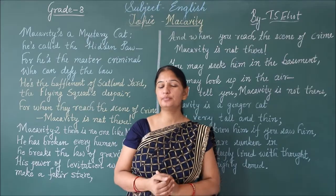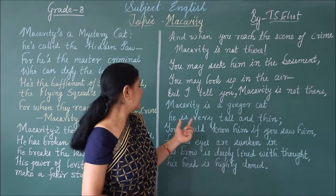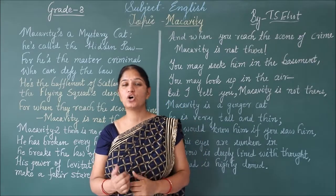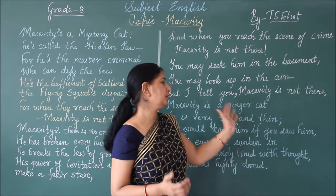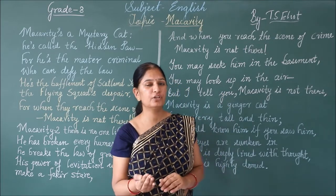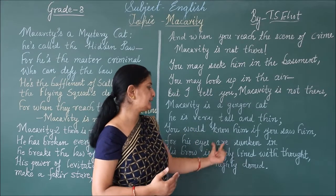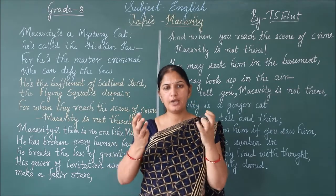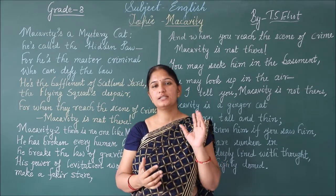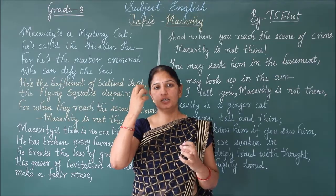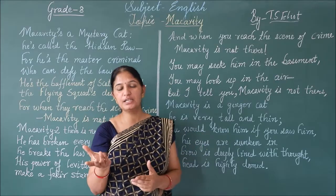McCavity is a ginger cat — he is very tall and thin, and that is why he is called a ginger cat. You would know him if you saw him, and if you see him once you will be able to recognize him later. For his eyes are sunken in. Just as you can see with an elder person, the eyes are sunken — McCavity has sunken eyes, so anybody can recognize him after seeing him.